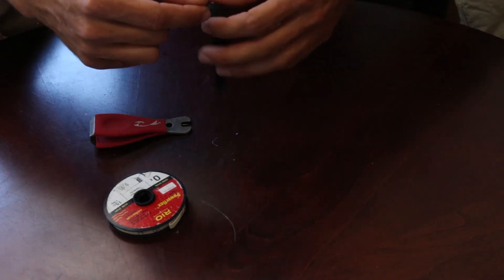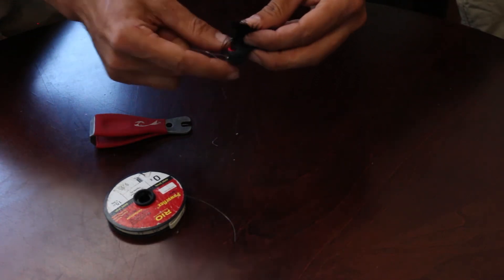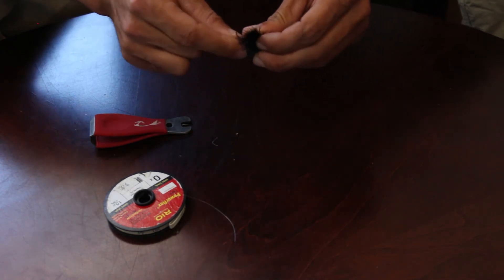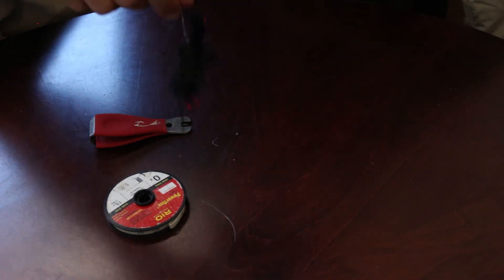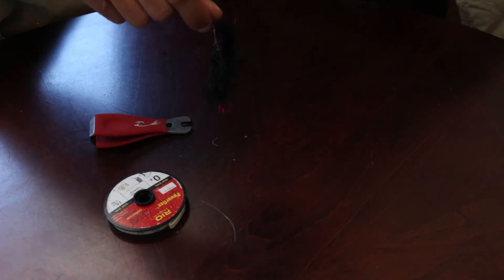What I don't like is it does make this fly look very natural, but with these double articulated flies I notice it happening a little bit more often than not—this hook comes around the front end and gets wrapped up like so, and that's a problem. You won't notice this sometimes. Even me guiding, my guests will be casting that for five, six casts and I'm like, wait a second, that doesn't look right.